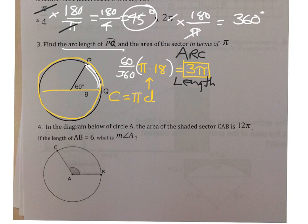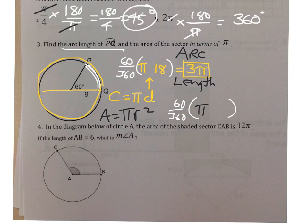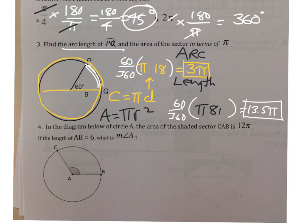To find the area of the sector is almost identical — it's still 60 over 360, but you're multiplying by the area of the circle: pi r squared. So that's pi times 9 squared, which is pi times 81. Using the calculator, that comes out to 13 and a half times pi for the area inside the sector. That makes sense because the entire circle has 81pi in it, but we only want this part of it.